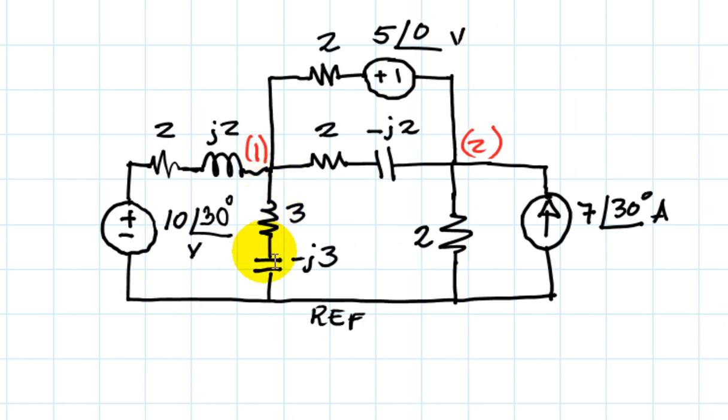The first thing we do is remove this branch, because the problem says so. Now this resistor in parallel with this current source can be simplified to a voltage source of 2 times 7, 14 volts with 30 degrees voltage source, in series with the 2-Ohm resistor.